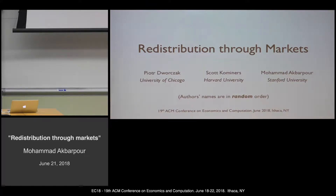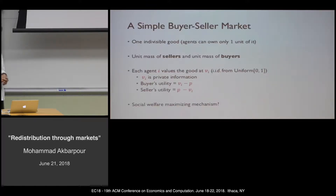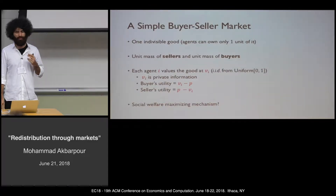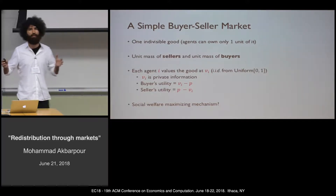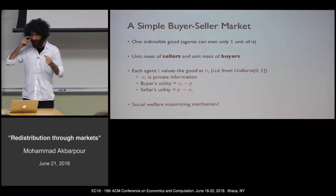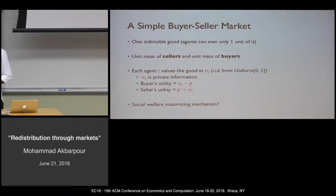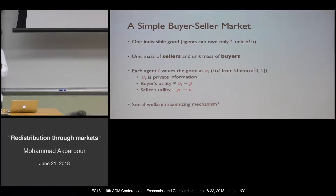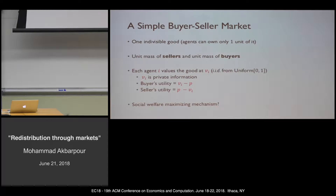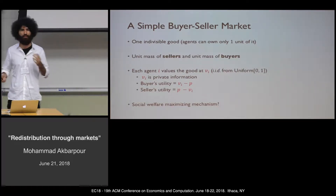I'm going to jump into a very simple version of the model directly. Suppose you have a buyer-seller market with one indivisible good, a unit mass of sellers, and a unit mass of buyers. Each buyer or seller has a private value Vi for this indivisible object, uniformly drawn from the interval [0,1]. Buyers have utility Vi minus P, and sellers have utility P minus Vi.